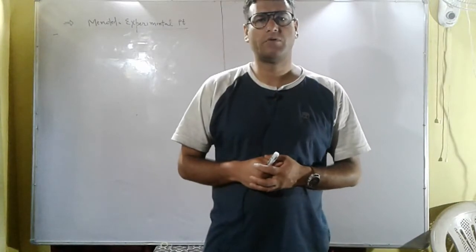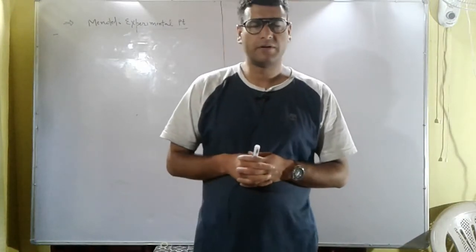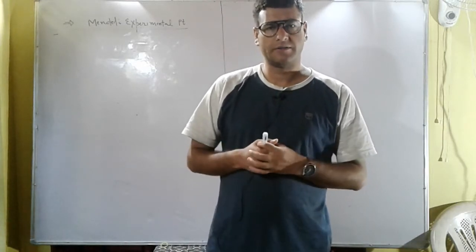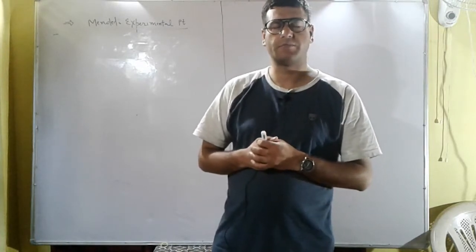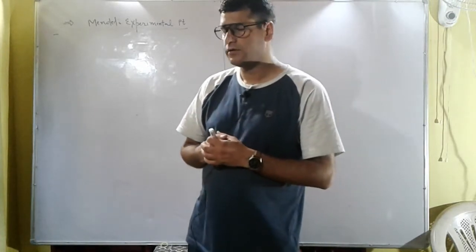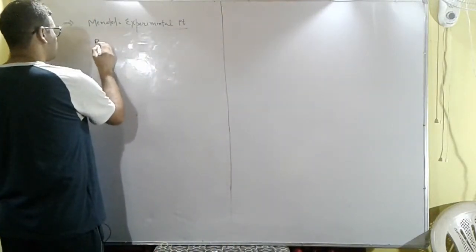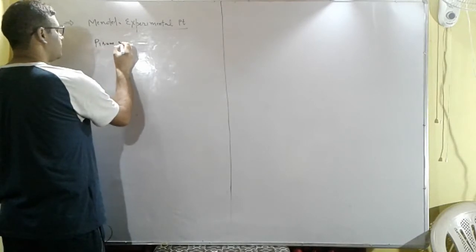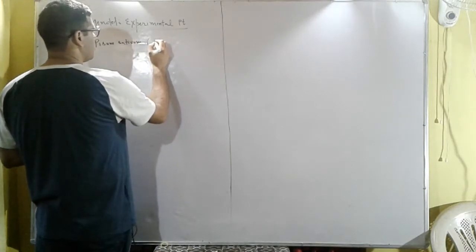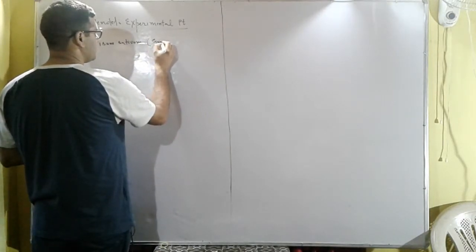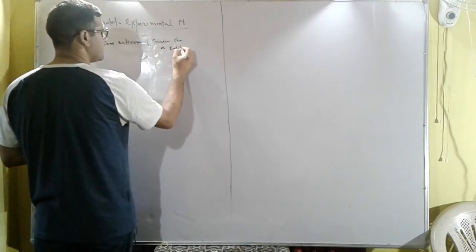Today we will talk about Mendel's experimental plant. Mendel selected Pisum sativum, the garden pea, for his hybridization experiments.